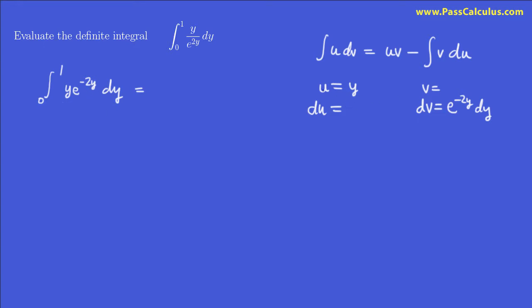Now let's fill in the rest here. If u is y, what is du? Well, what's the derivative of y with respect to y? It's 1, right? 1 dy. And what's the antiderivative of e to the minus 2y? Well, it's going to be e to the minus 2y. But in front, we need a canceling factor of minus 1 half, right? So there we go. If I take the derivative of this, I do get this. And that's the whole point.